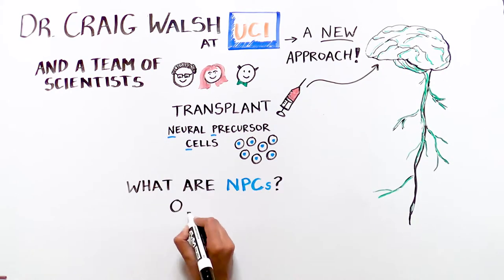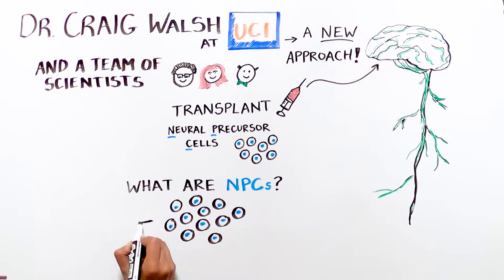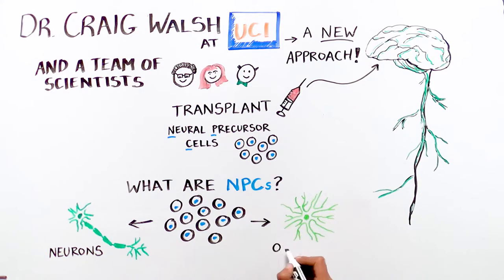What are NPCs? This is a group of cells that can become three different cell types, including neurons and oligodendrocytes, the cells that produce myelin.